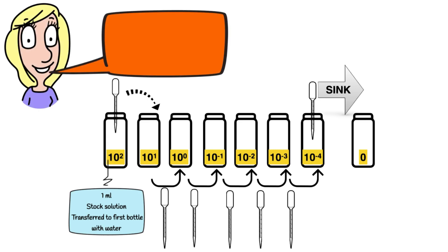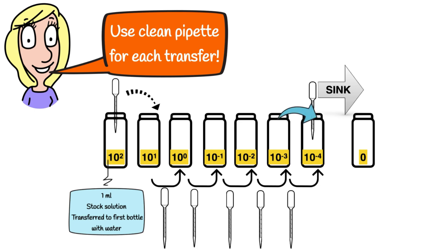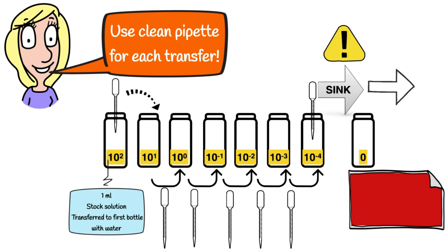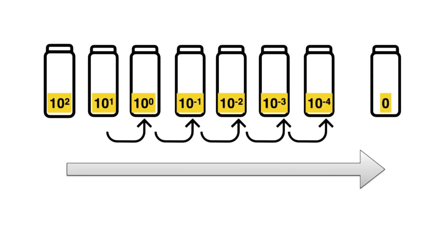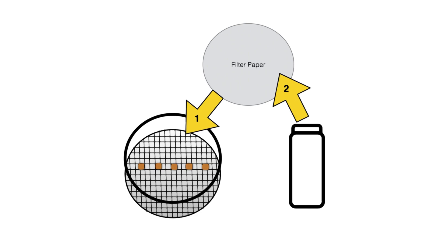Continue taking 1 ml out of each bottle and putting it into the next, using a clean pipette for each transfer. Continue until you reach the penultimate bottle — take the 1 ml out of that 10⁻⁴ bottle and put it in the sink. Do not transfer it into the final bottle. That final bottle should contain only distilled water — it's going to act as your control. Your serial dilution is now complete. Bottle zero contains just distilled water — that's your control — and each time you performed the dilution, each bottle became more dilute or less concentrated than the previous one.